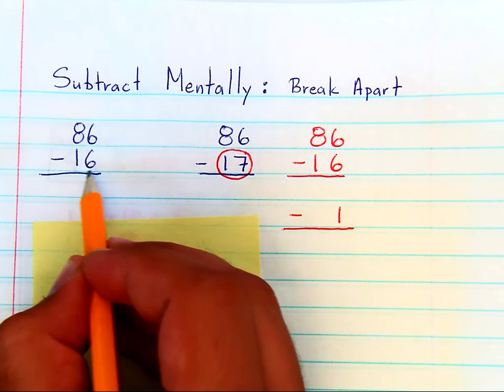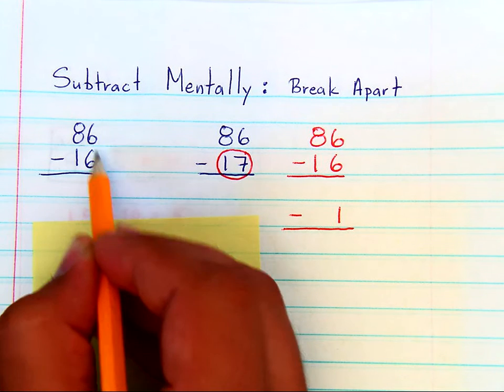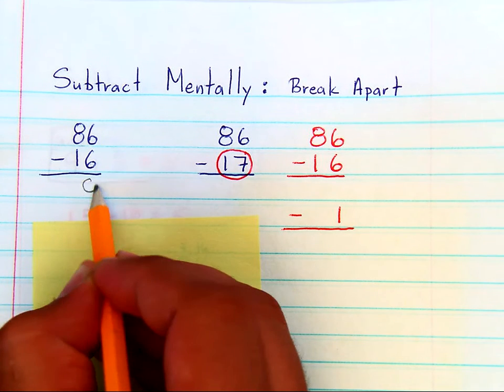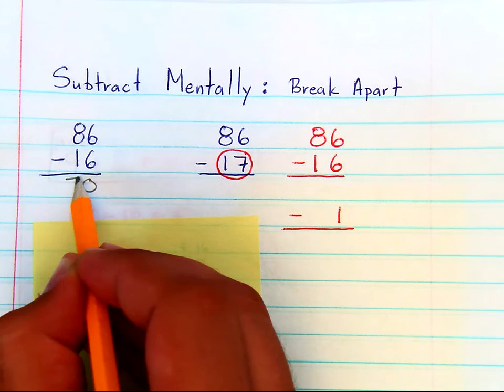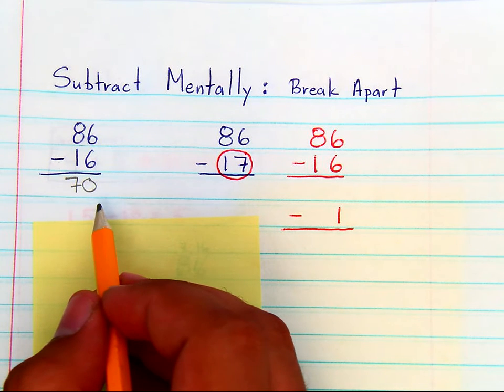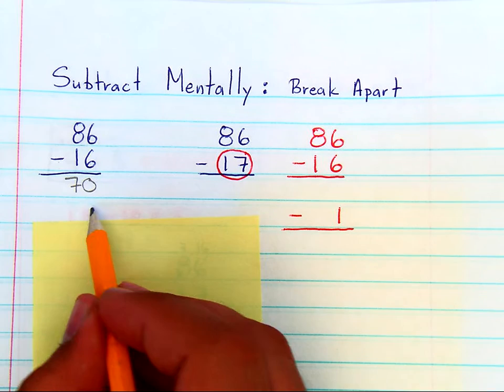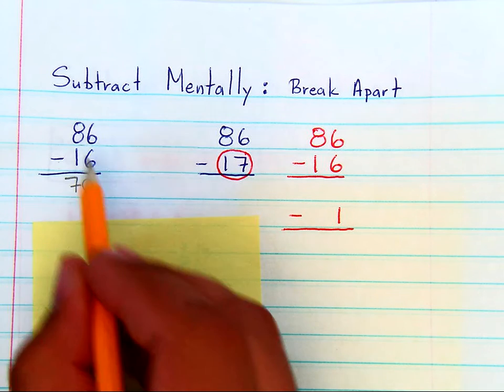When you have a problem like 86 minus 16, it's not difficult to see that 6 minus 6 is 0 and 8 minus 1 is 7. Seeing that 86 minus 16 is 70, that is not very difficult to do either mentally or on paper.